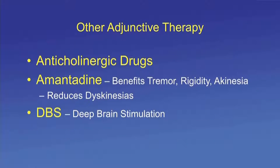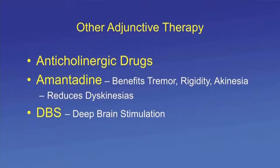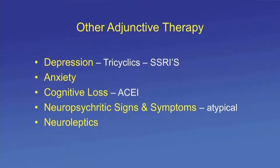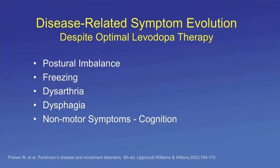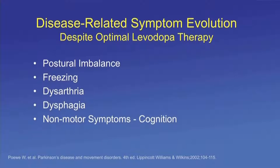Other adjunctive therapies: anticholinergics and amantadine can be used — amantadine benefits tremor, rigidity, and akinesia and is most useful in advanced disease to reduce dyskinesias. Deep brain stimulation is an important consideration. For depression, tricyclics or SSRIs can be used. For cognitive loss, the acetylcholinesterase inhibitor rivastigmine (brand name Exelon), now available as a patch, is of benefit. For neuropsychiatric signs and symptoms, atypical neuroleptics are commonly used. Despite optimal levodopa therapy, disease-related symptoms continue to evolve: postural instability, imbalance, freezing, dysarthria, dysphagia, and non-motor psychiatric and cognitive symptoms.